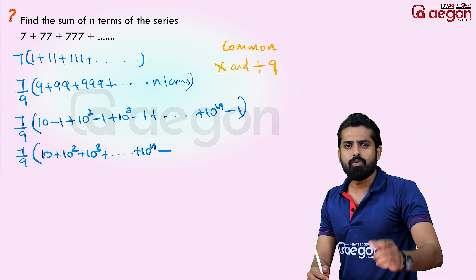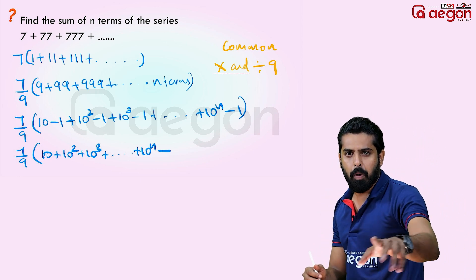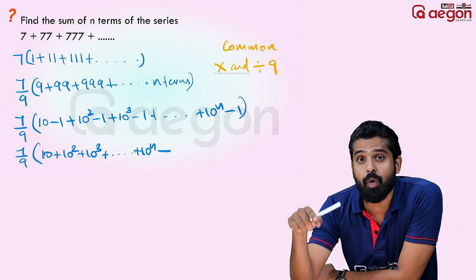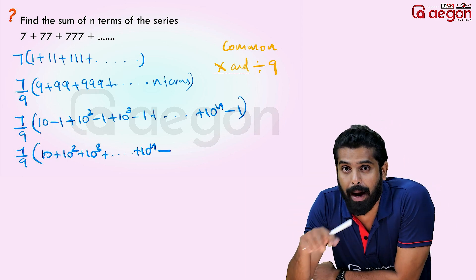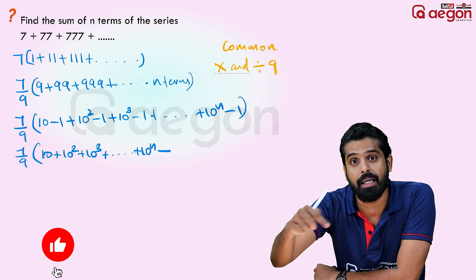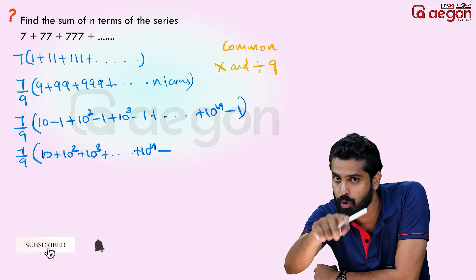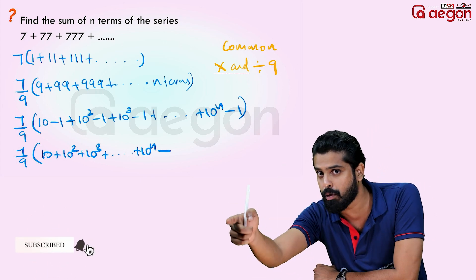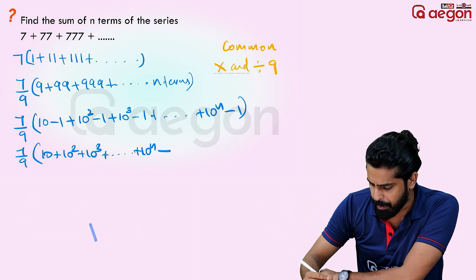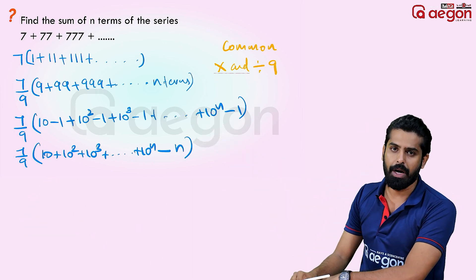Minus 1 minus 1 minus 1 ... going to n times. So we have minus n at the end, because we subtract 1 a total of n times.